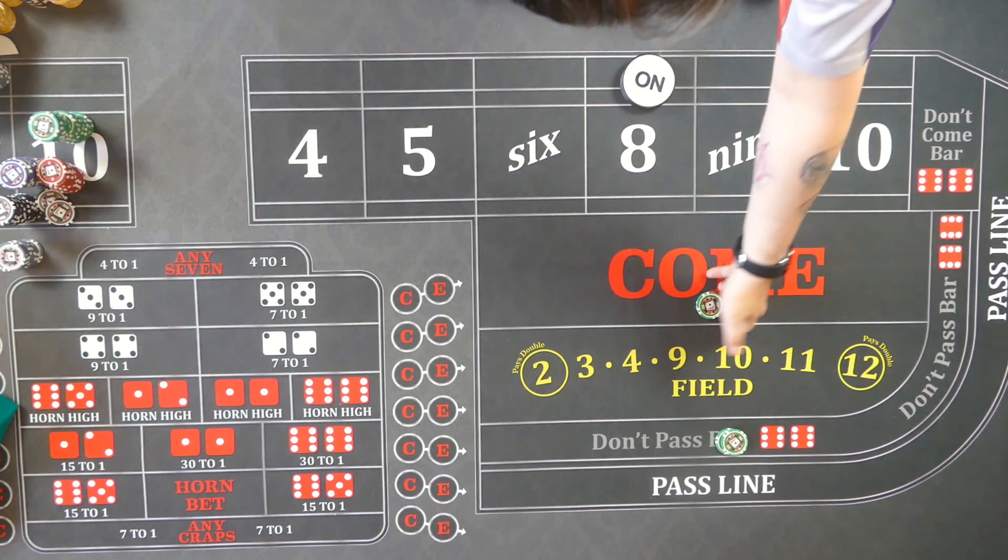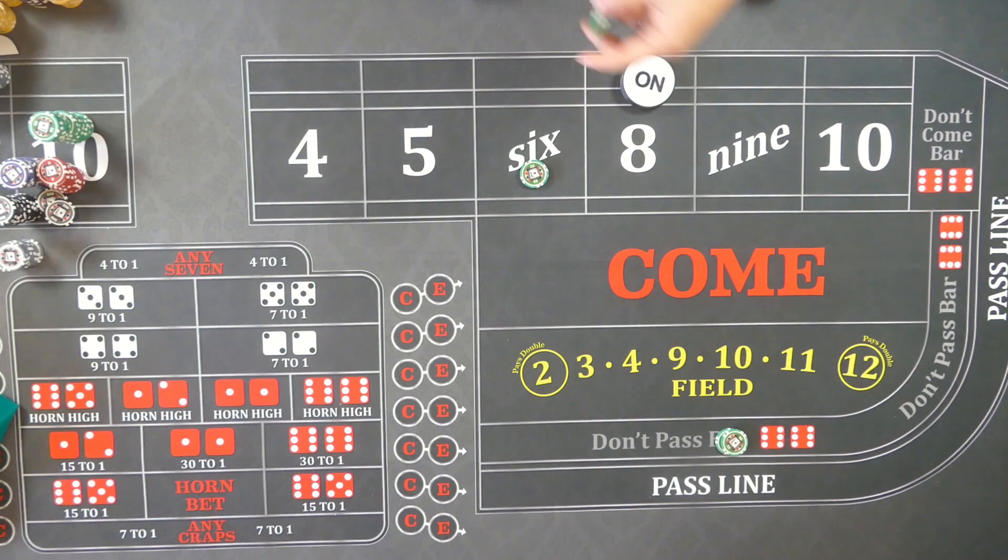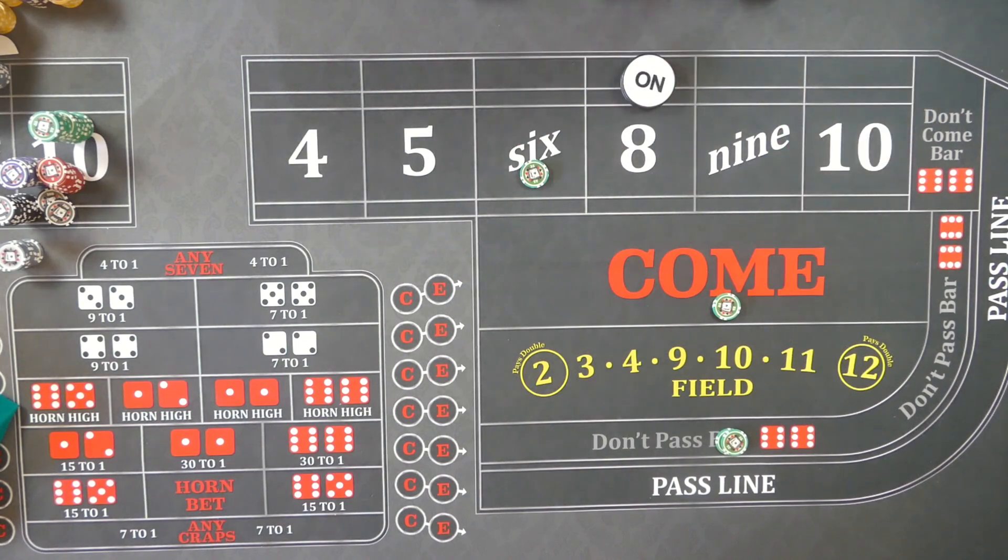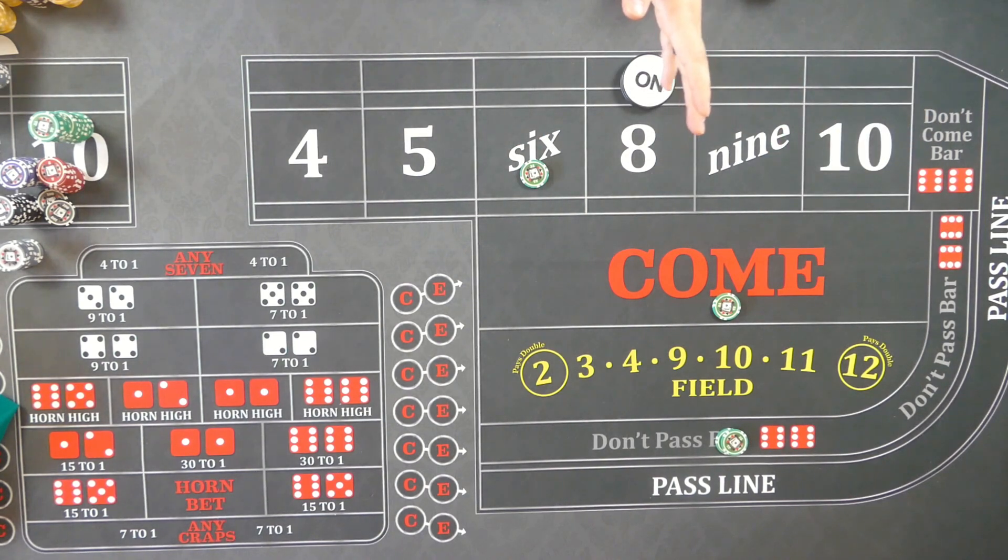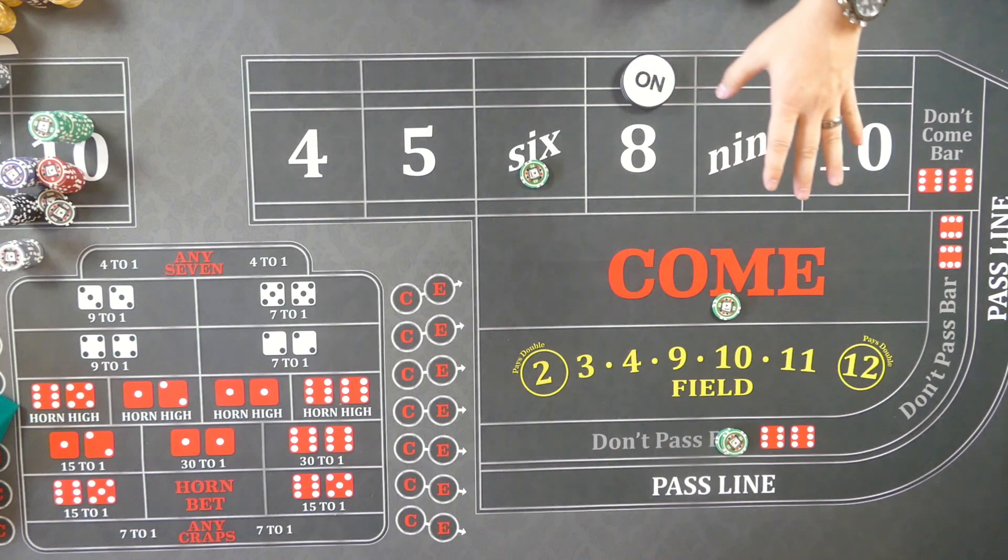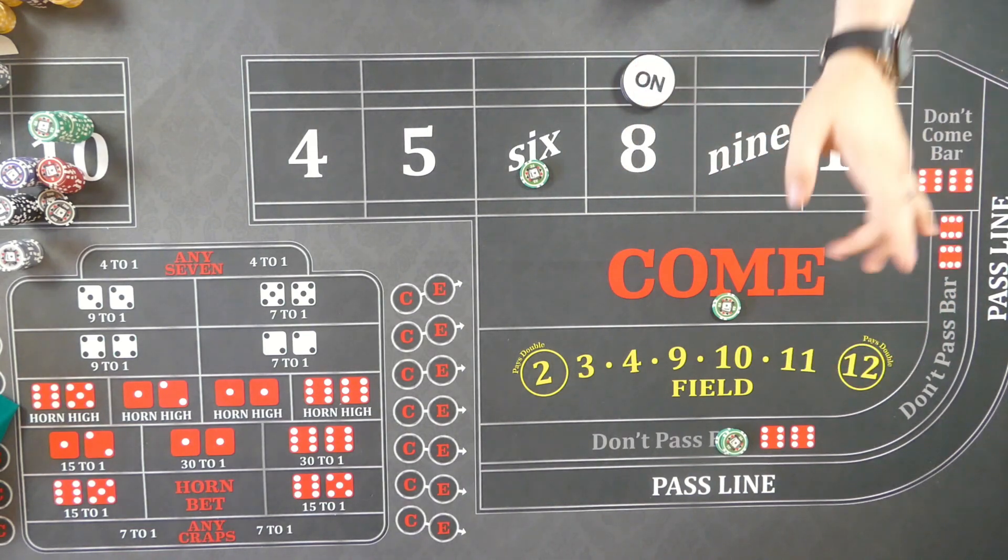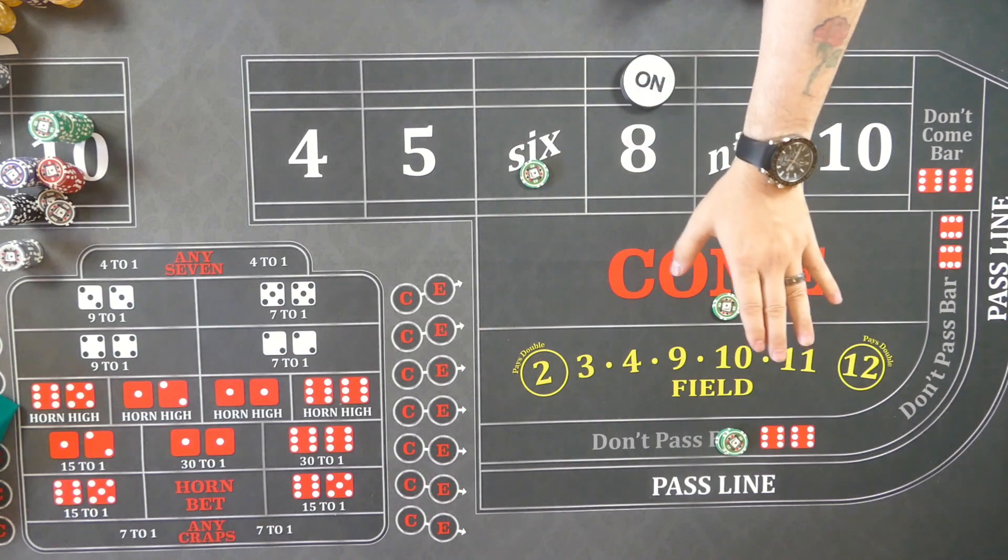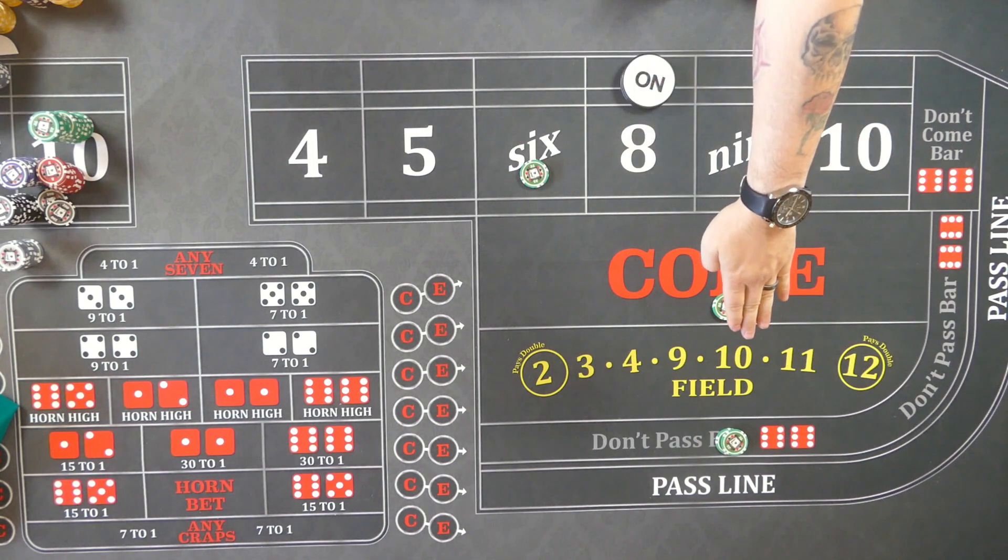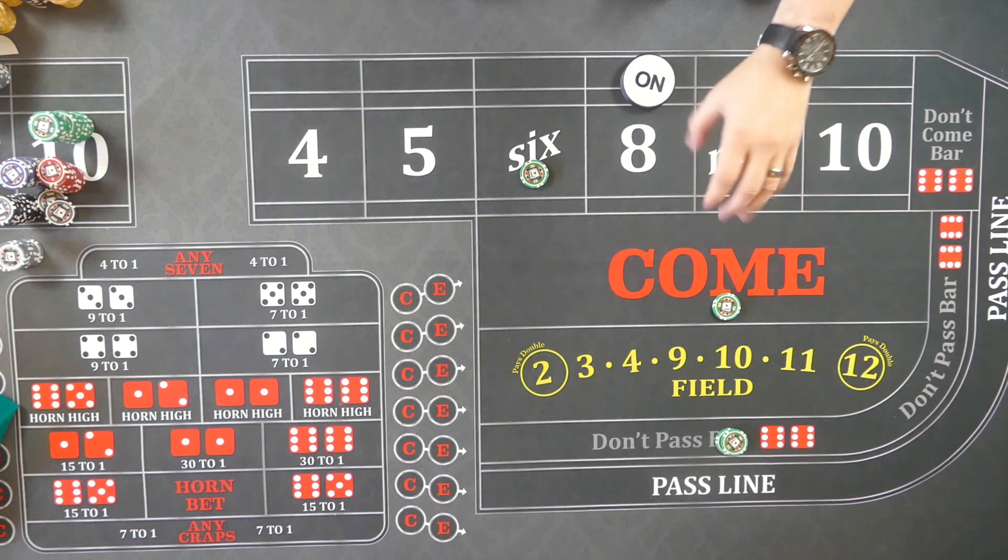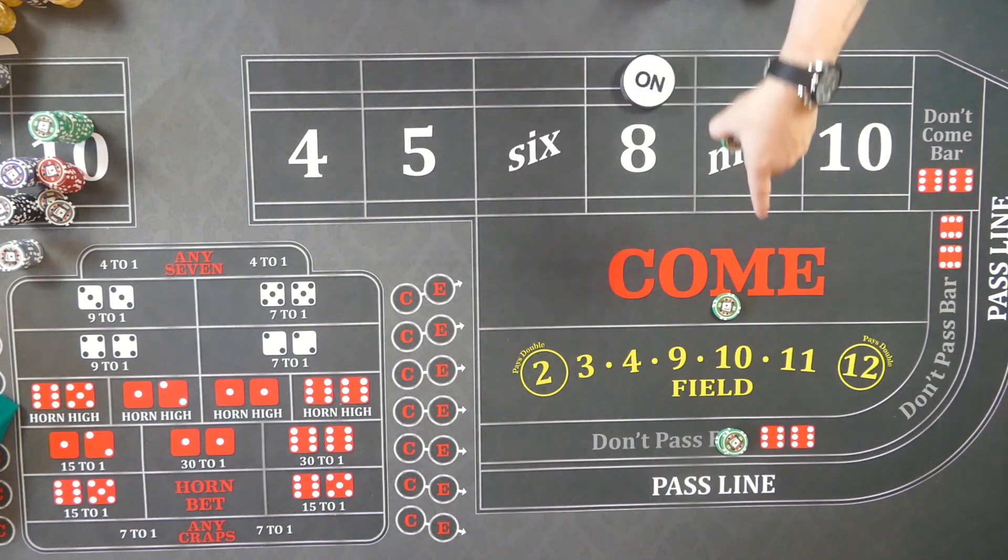Whatever rolls, it would travel and he would make another come bet. Now at this point, if the seven out occurs, these are a wash, so he's only going to win 50 bucks. Point seven out, he's going to win a hundred bucks. Keep in mind on the come out roll, he's only got three ways to win and eight ways to lose on his don't pass.